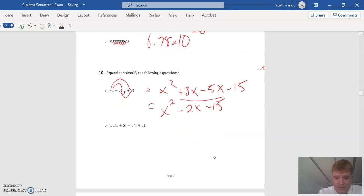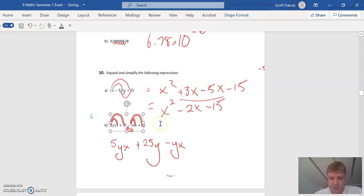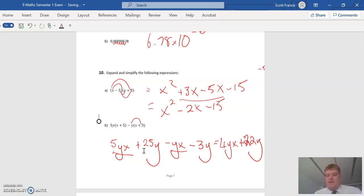Next one's going to be a little bit more interesting because we've got some x's and y's. We've got a minus y in here. 5y times x is 5yx. 5 times 5 times y is 25y. Now the second part. Minus y times x is minus yx. Minus y times 3 is minus 3y. Now we can simplify it because we've got 5 times yx minus yx. That's going to be 4yx. We've got 25y minus 3y is going to equal 22y.